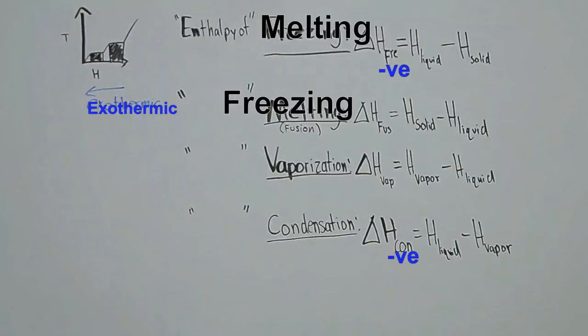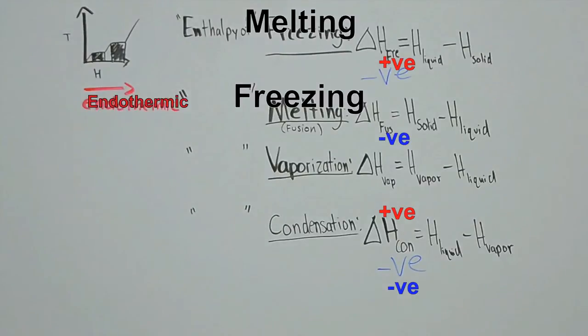Tying back exothermic and endothermic reactions, notice the directions these processes undergo on the little graph at the top left. Phase changes that undergo exothermic reactions are cooling down from releasing heat, which is why it has a negative value. While phase changes that undergo endothermic reactions are warming up from absorbing heat, earning them a positive value.